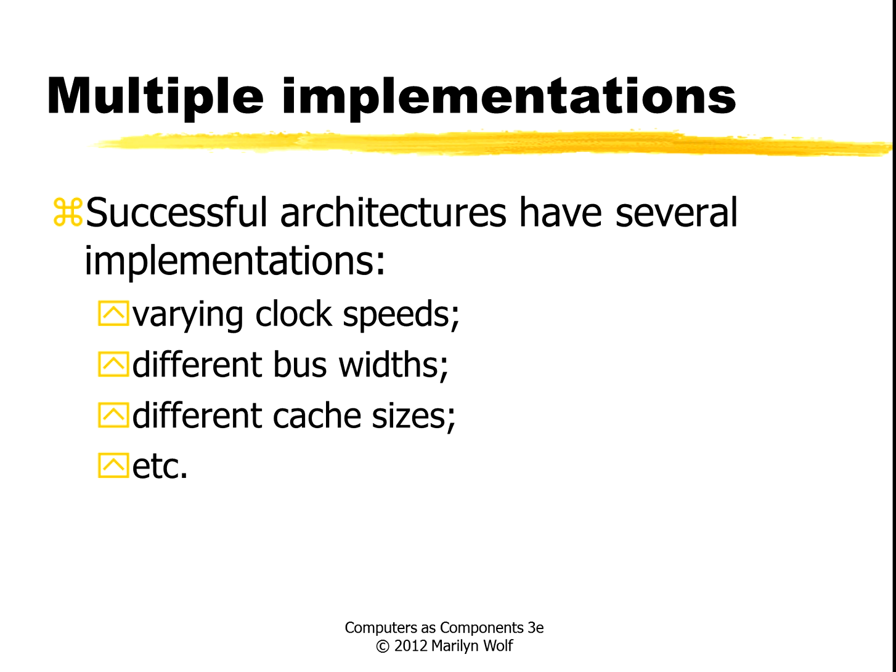A given architecture is the set of instructions that the machine operates on. We want to be able to build several different implementations of the same architecture, running at different clock speeds, different bus widths, different cache sizes, and so forth. That gives us choices in the cost-performance trade-offs of the CPU without having to rewrite our code all the time.